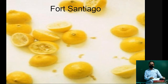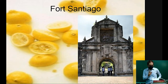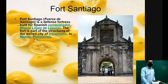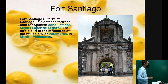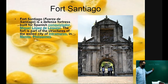Modern urban dwellings, on the other hand, are typically two-story structures with a concrete ground floor. This is architecture in the Philippines during the Spanish period. One of these is Fort Santiago — Fuerza de Santiago — a defense fortress built for Spanish conquistador Miguel Lopez de Legazpi. The fort is part of the structure of the walled city of Intramuros.